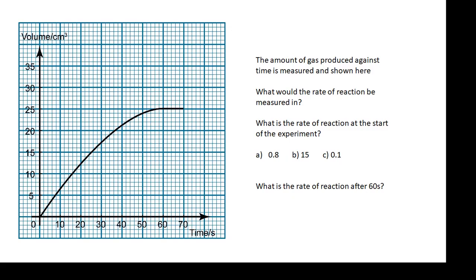Here's something for you to have a go at, a bit of practice doing that. So we have a graph of volume against time. The amount of gas produced against time is measured and shown here. What would be the rate of reaction? Well, what would the rate of reaction be measured in? What is the rate of reaction at the start of the experiment and at those different times? What is the rate of reaction after 60 seconds? And if you're in my class, this would be a homework for you to do. So I'm not going to tell you the answers.